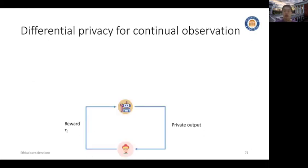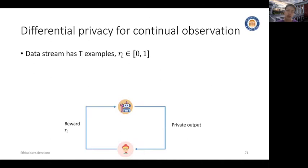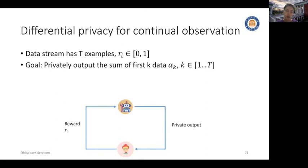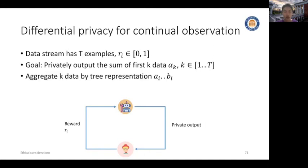Since we are working with the bandit setting, here is some background regarding differential privacy for continual observations. In this problem setting, we are dealing with a data stream which has T examples — for example, reward r_i belonging to the range 0 to 1. The goal is to privately output the sum of the first K data. The main strategy is to aggregate the data by a tree representation to output private statistics.